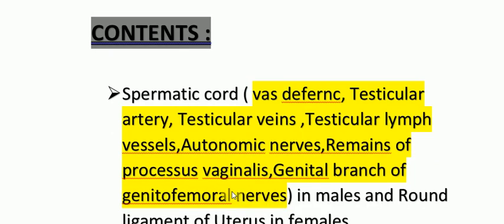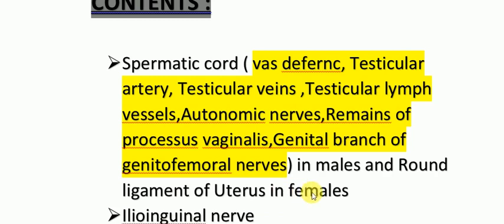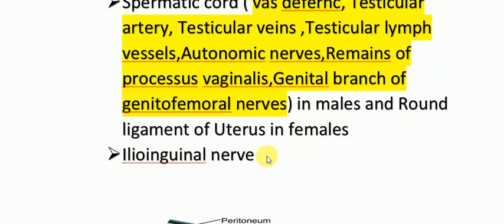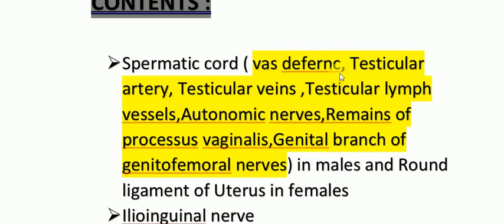Now let us discuss the contents. The inguinal canal allows passage of the spermatic cord in males and the round ligament of the uterus in females — from the uterus to the labia majora — along with the ilio-inguinal nerve. The spermatic cord includes: vas deferens, testicular artery, testicular vein, testicular lymph vessels, autonomic nerves, remains of the processus vaginalis, and the genital branch of the genitofemoral nerve.